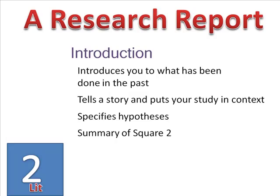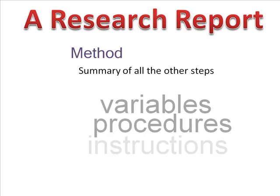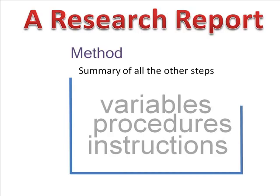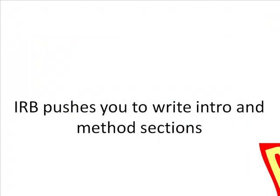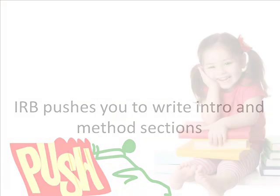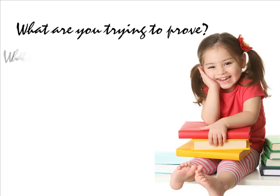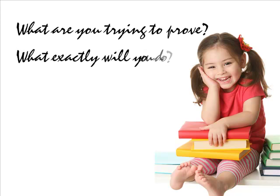The methods section is a write-up of all the other steps. It specifies how you're going to measure the variables, which procedures you're going to do, what instructions you'll give the subject, and every detail of how you'll conduct your study. So submitting your proposal to an IRB forces you to get these two major sections written. The committee will have at hand why you want to conduct your study and how you propose to do it. Such attention to detail helps eliminate unethical studies or mistreatment of research subjects.